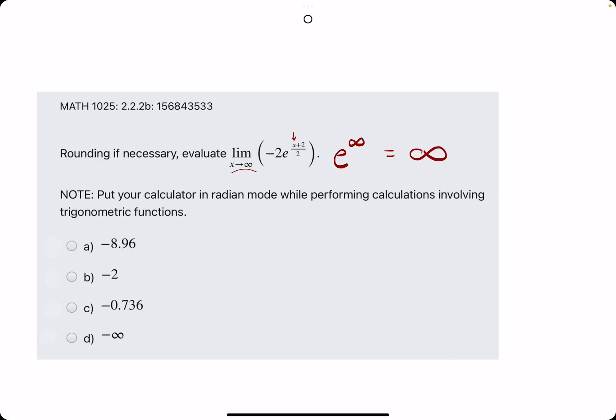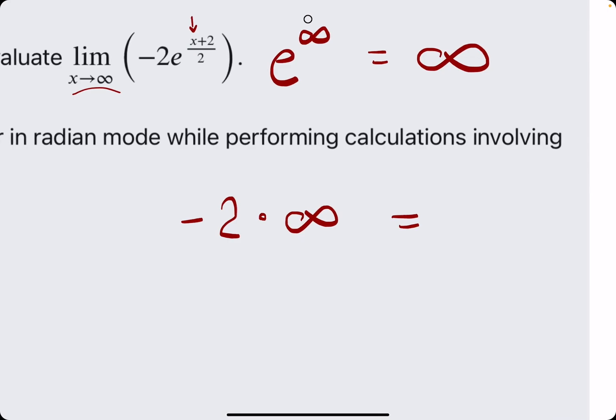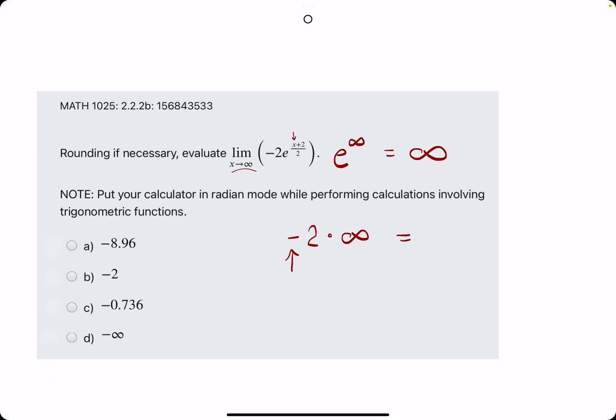So really what we have is negative 2 in front of that times infinity. The 2 gets absorbed, and so really, but the negative is still accounted for, so we will just call this negative infinity. So that is option D.